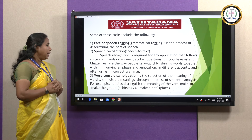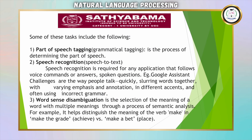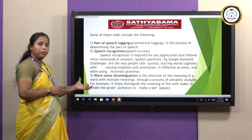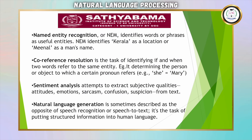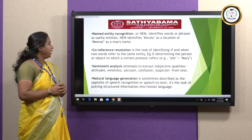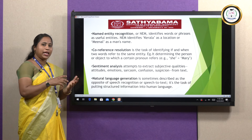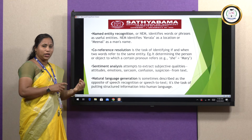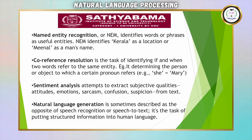For example, with the verb 'make': in 'make the grade,' make means achieve, whereas in 'make a bid,' make means place. The same word carries different meanings in different sentences, and these need to be identified properly. The fourth task is named entity recognition, which identifies words or phrases in a sentence — for example, identifying 'Kerala' as a location, or 'Meanel' as a person's name — using existing databases.